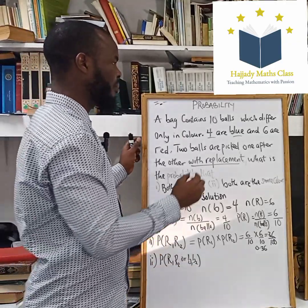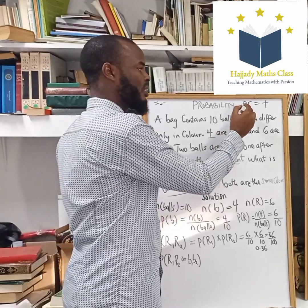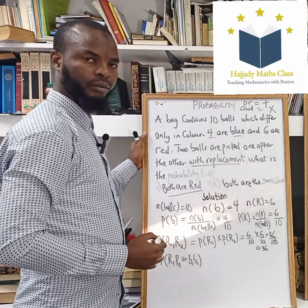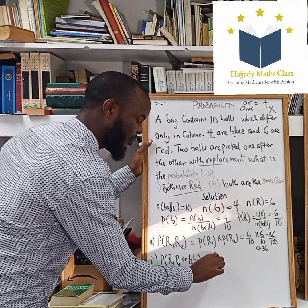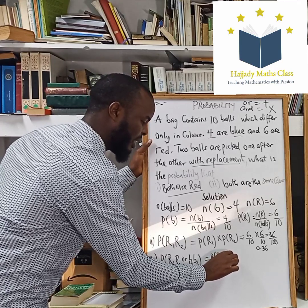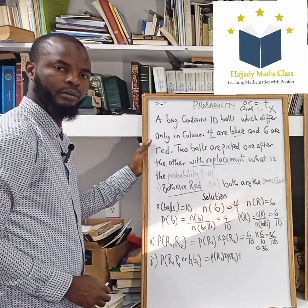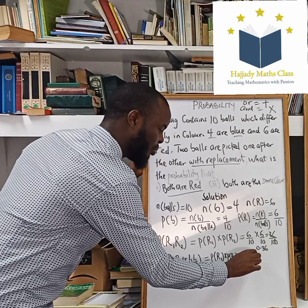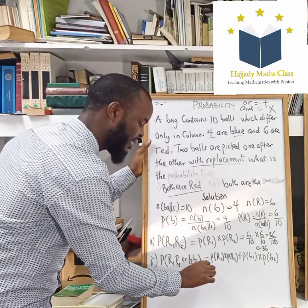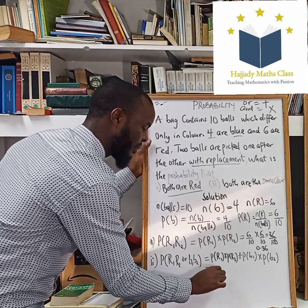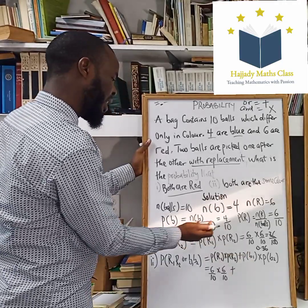Now, in probability, any time you are using 'or' it translates to addition, and any time we are using 'and' this translates to multiplication. So writing this: probability of red and red — the first event is red, the second is red — plus the probability the first is blue multiplied by the second is blue. We have blue to be 4 over 10. So red is 6 over 10, the second red is 6 over 10. Don't forget, this is with replacement. Plus the first is blue, probability of blue is 4 over 10, and the second blue is also 4 over 10.